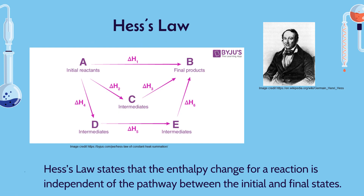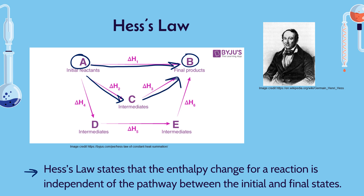So what even is Hess's law? Hess's law states that the enthalpy change from a reaction is independent of the pathway between the initial and final states. That means that if I have reactants A and I'm turning them into products B, I could go straight from A to B, or we could turn A into C and then C into B, or A into D then D into E then E into B. Regardless of what pathway we take to get from A to B, the total enthalpy change is going to be the same.